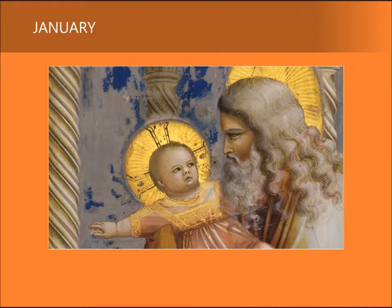Luke recounts how it had been revealed to Simeon, an old man of the Temple, that he would not die before he had seen the Messiah. Simeon gazes reverently upon the Christ child. As Simeon says, he may depart in peace now that his longing to see the Messiah has been fulfilled.